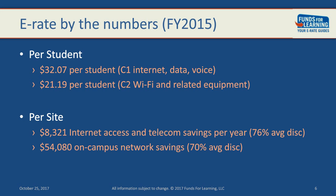You can also look at that on a per-site basis. The average on a per-site basis for telecommunications and internet access was $8,321. For on-campus connections — wireless access points and so on — on average about $54,000, based on a 70% discount. Statistics can be tricky, but it's important to understand not just that the eRate program is a $4 billion a year program, but in general terms, what it might look like for your school district and how you might benefit.